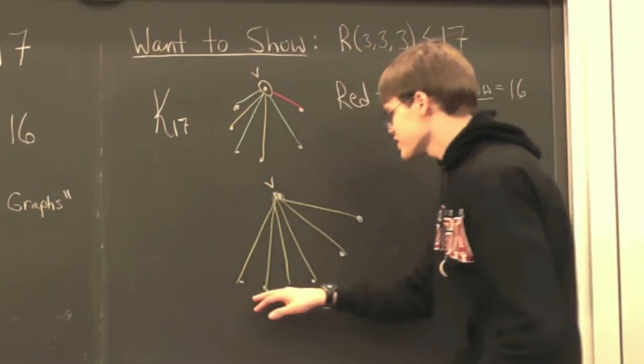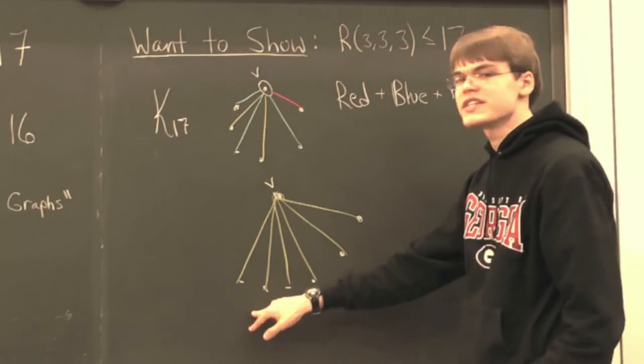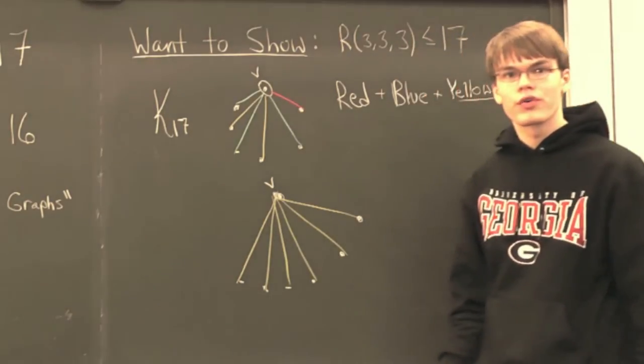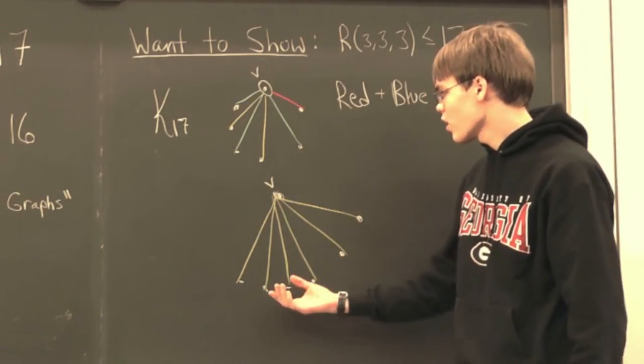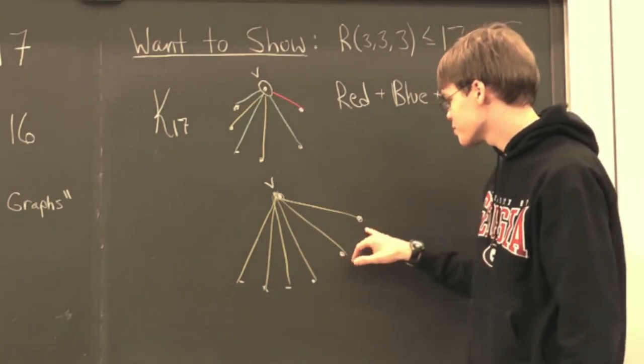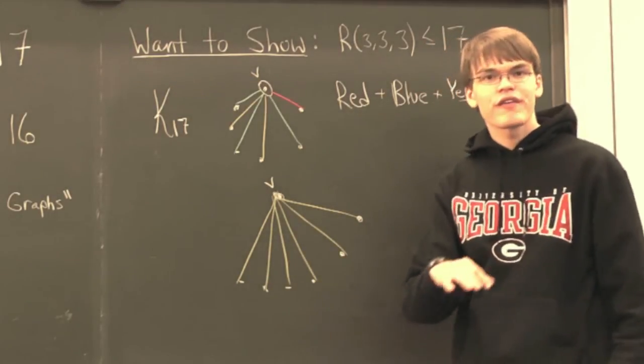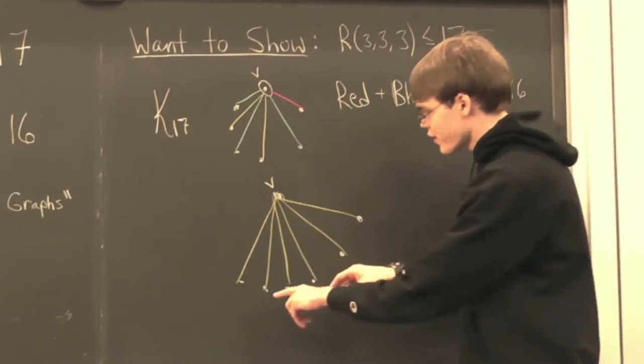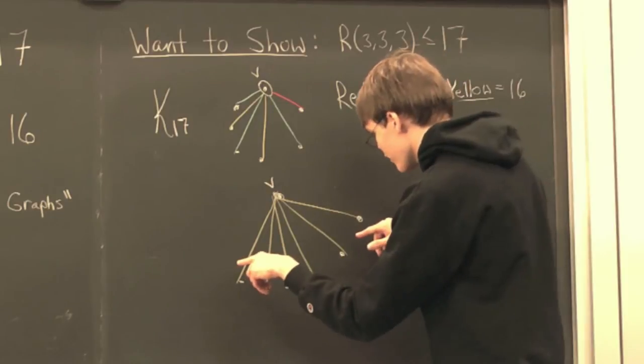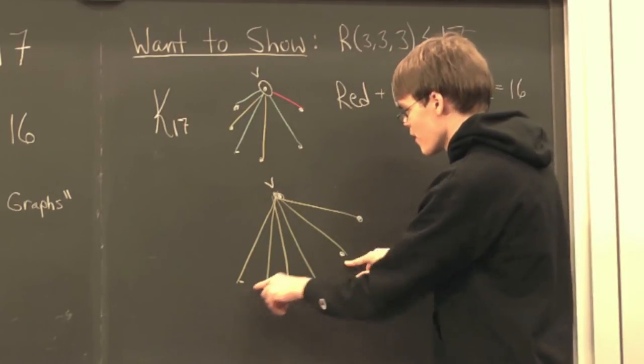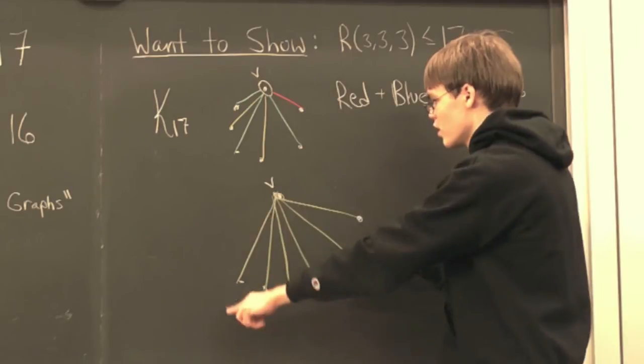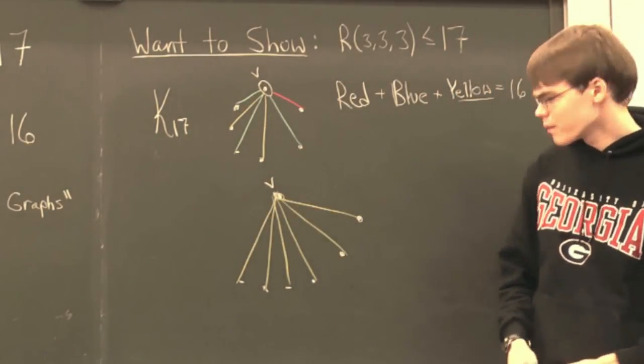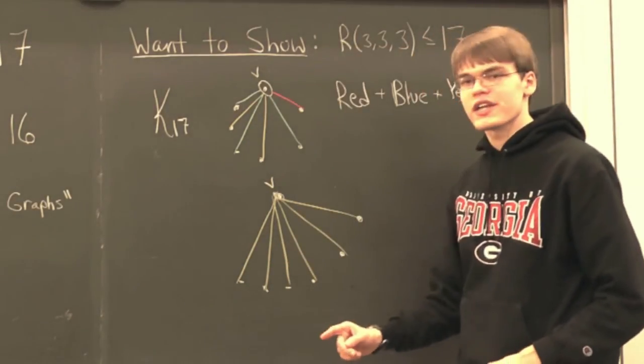Now, at this point, we want to consider the edges between these six vertices themselves. Now, one of two cases could hold. The first case is that we have a yellow edge between any of these vertices. Now, if we have a yellow edge between any of these vertices down here, we're finished. Because if we choose an arbitrary pair of vertices down here with a yellow edge, then they're both connected to V with a yellow edge. And there's our monochromatic triangle. So, that's our first case.